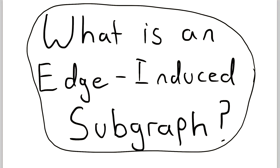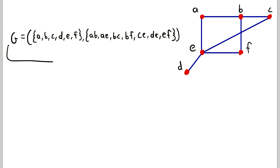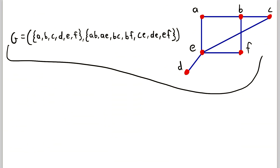I already did a lesson on vertex-induced subgraphs, so if that's what you're looking for I have that too on the channel, but today we're talking about edge-induced subgraphs. We're going to use the same graph that I used in the vertex-induced subgraphs lesson. We're calling it G — here's its vertex set, here's its edge set, and you see a drawing of G right there.